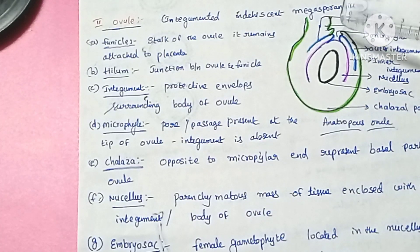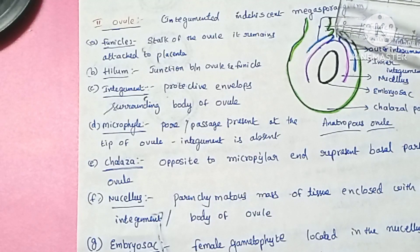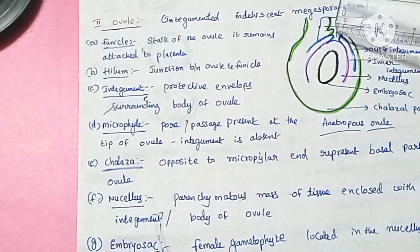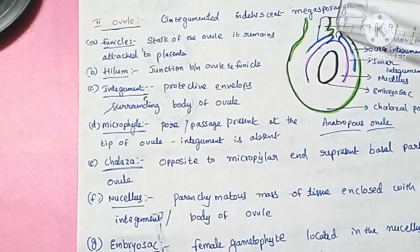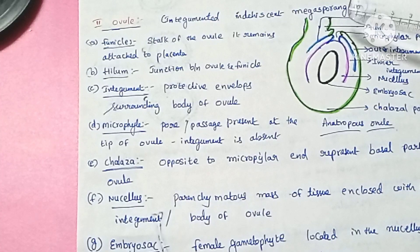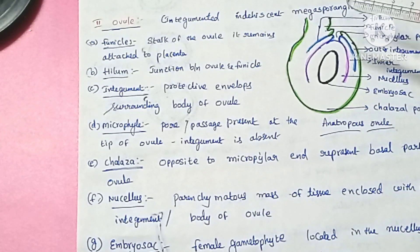Next is the micropyle. The micropyle is a pore present at the tip of the ovule. The integuments meet at this micropyle region, leaving a small opening at the tip.